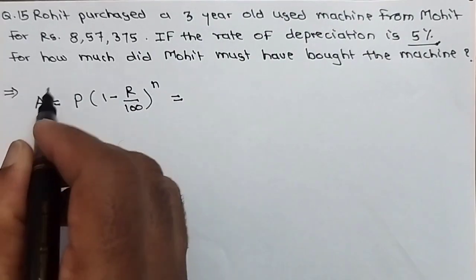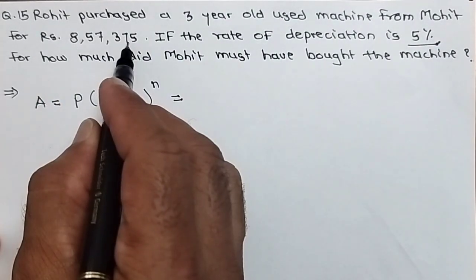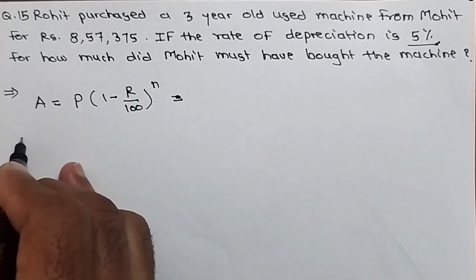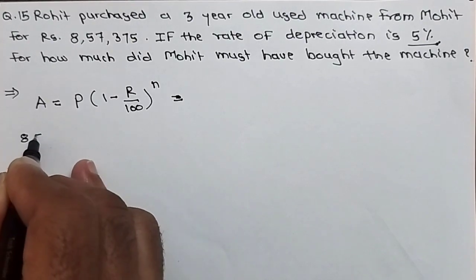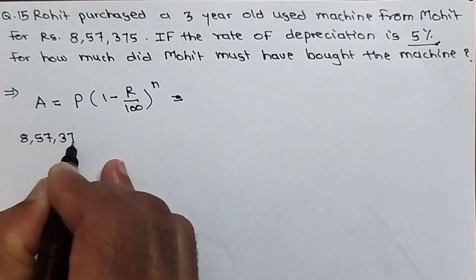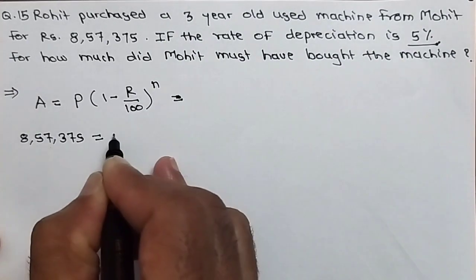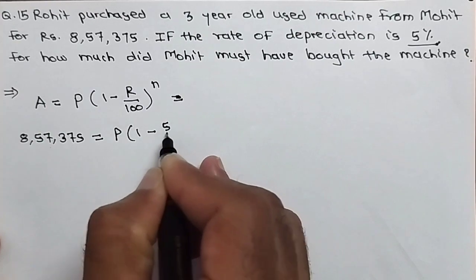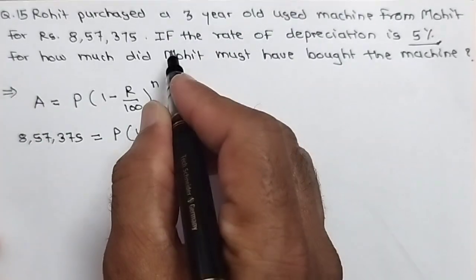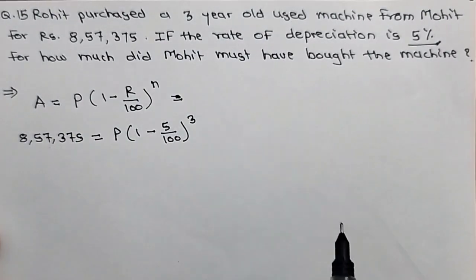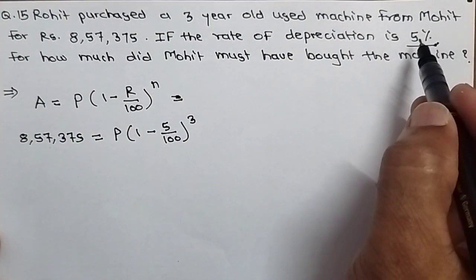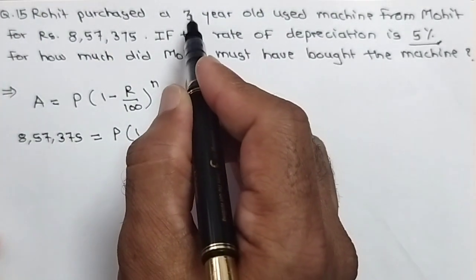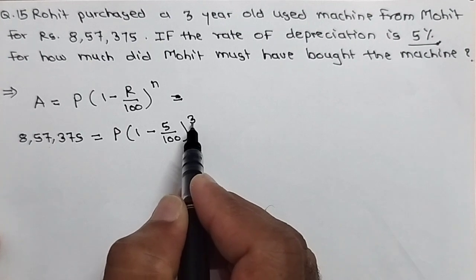Here we know the A, because final amount is given. We have to find the principal amount. So I will write here A as 857,375, that will equal to P we have to find, then 1 minus rate of depreciation is 5 divided by 100, and number of terms is given 3. Now see here, rate of depreciation is 5% per annum and number of terms is 3 years, so N will be 3.